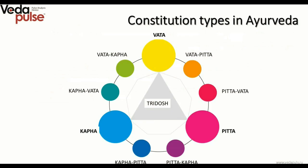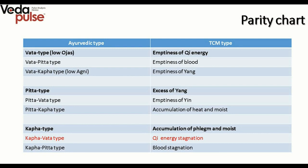Traditionally, three basic constitution types are pointed out in popular Ayurveda: Vata, Pitta, and Kapha. But the things are much more complicated — having combined with each other in different ways, Vata, Pitta and Kapha form nine subtypes, and the tenth type is an ideal combination or balance of doshas. The key information is contained in the parity chart that shows how traditional Chinese symptoms correlate with Ayurveda. Looking at the patient from the point of view of different sciences and approaches allows for a more complex and complete treatment.